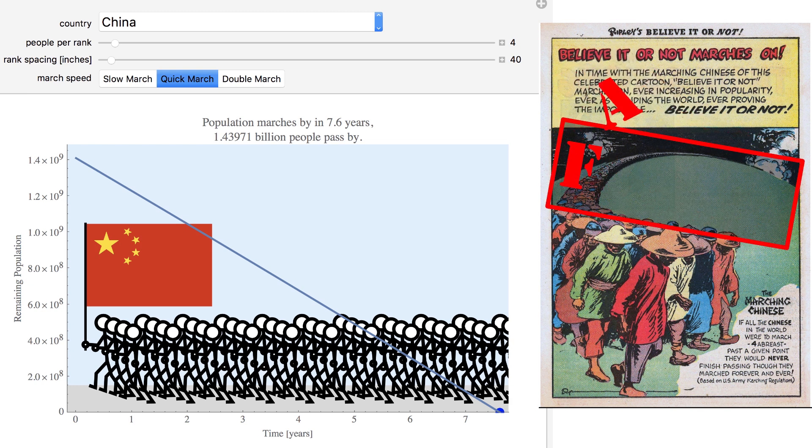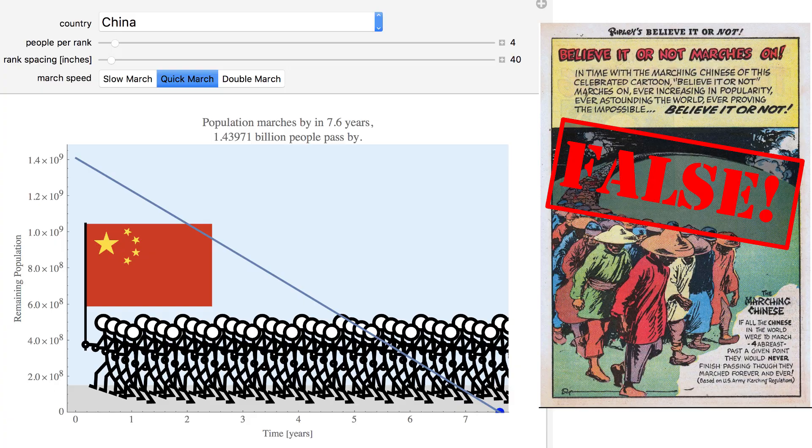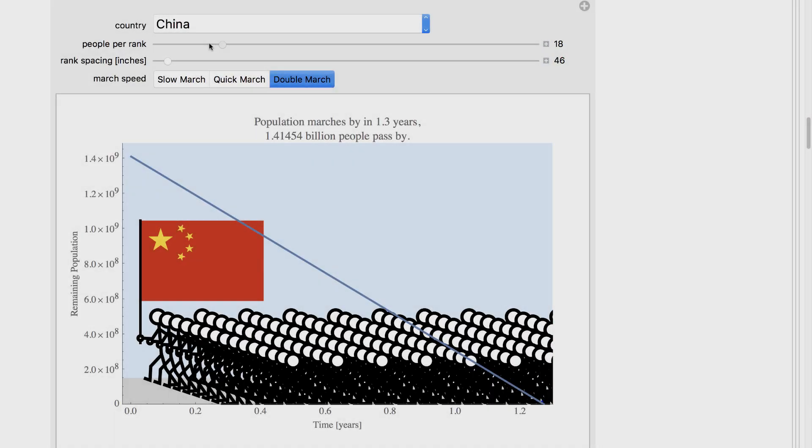So Ripley's claim is false, at least in 2020. 1.4 billion Chinese could pass in 7.6 years.